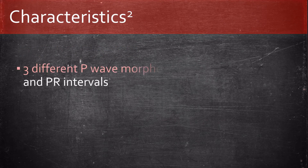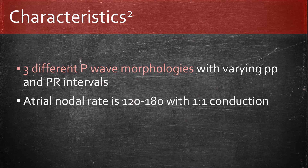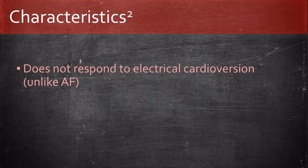Characteristics of MAT include three different P wave morphologies with varying PP and PR intervals. The atrial rate is between 120 and 180 with a 1-to-1 conduction. It's important to note that MAT does not respond to electrical cardioversion, unlike AF, and digoxin may worsen it.